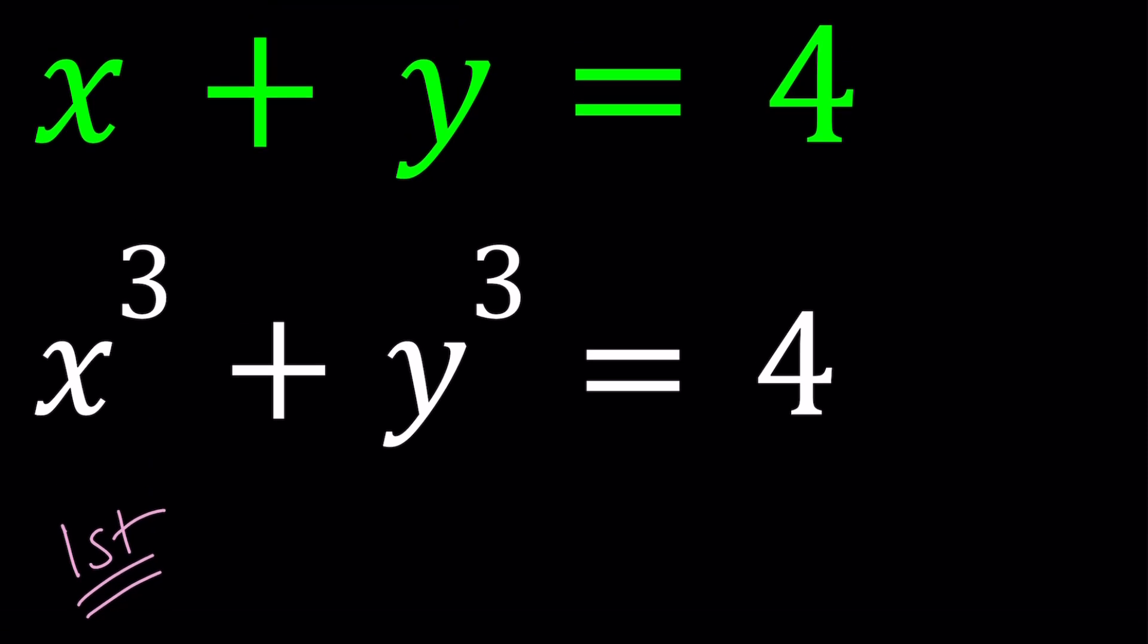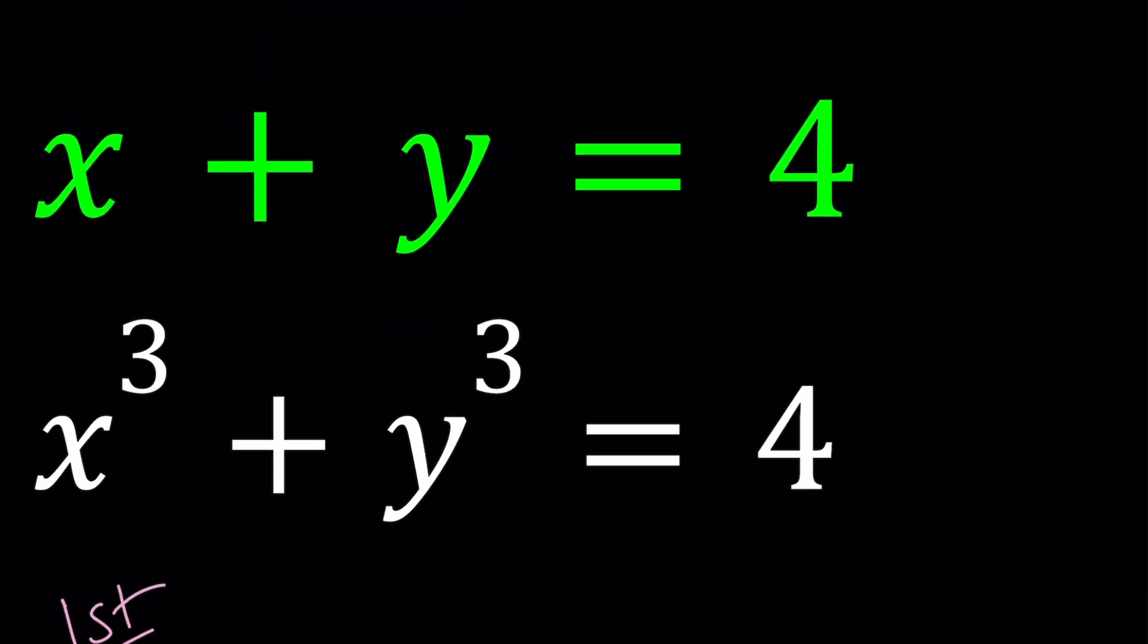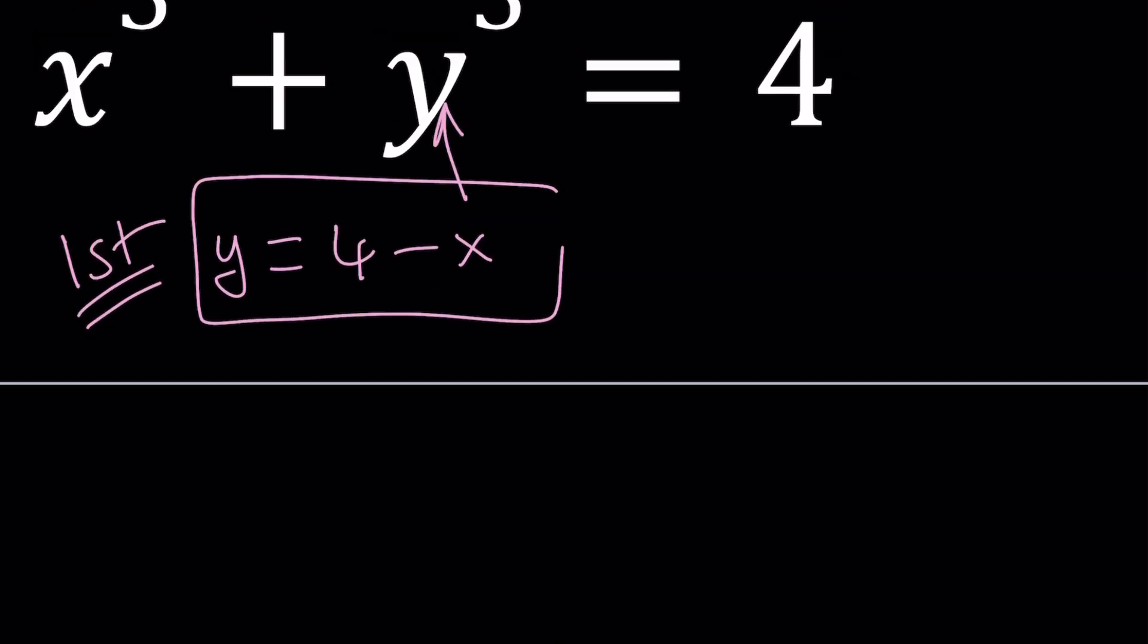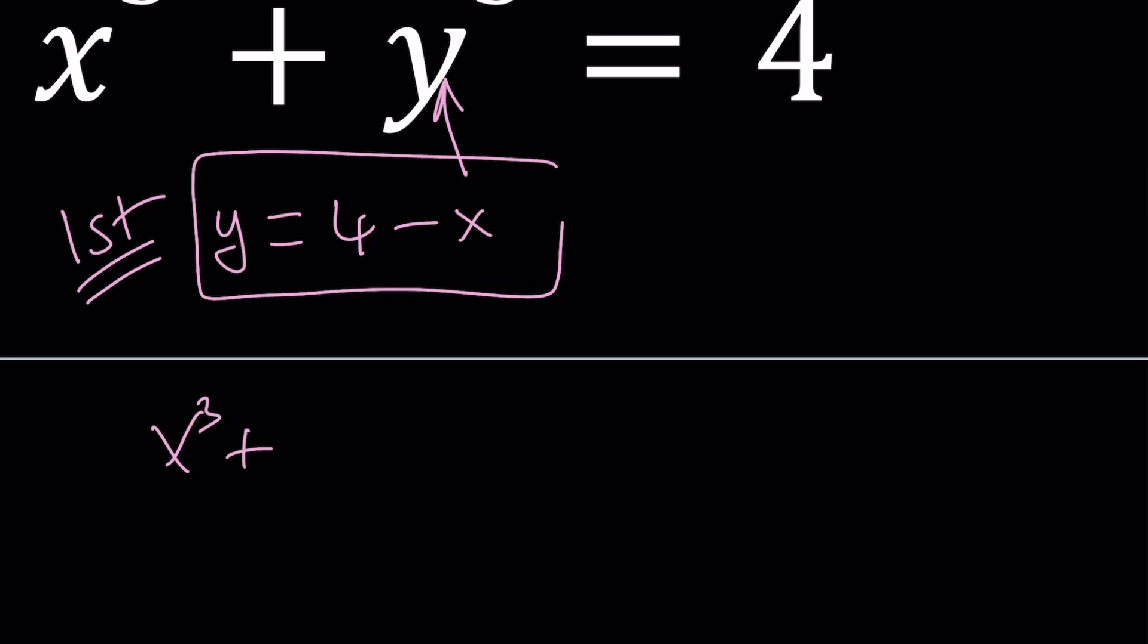So for my first method, I'm going to use substitution. I want to isolate y, so let's subtract it. First equation gives us y equals 4 minus x. And then I'm going to plug this in here, replace y with 4 minus x.